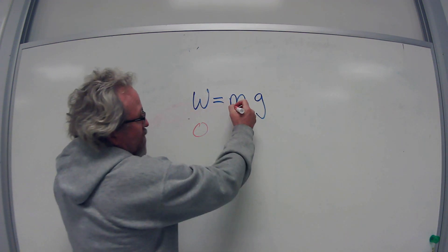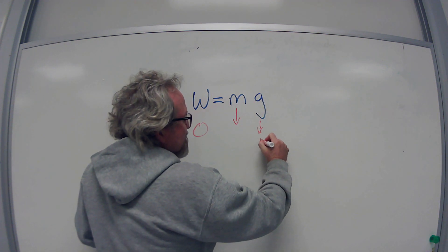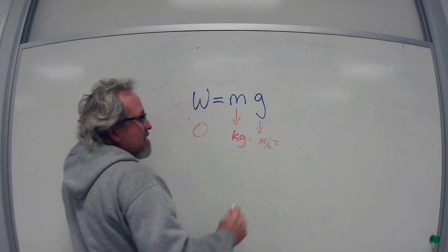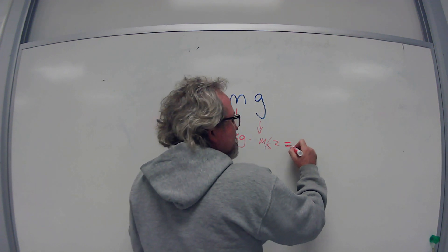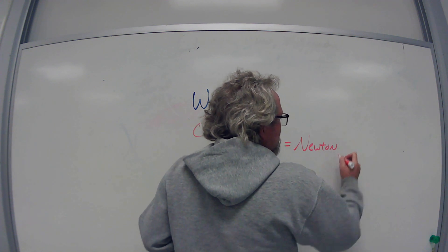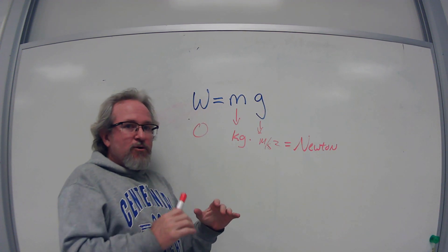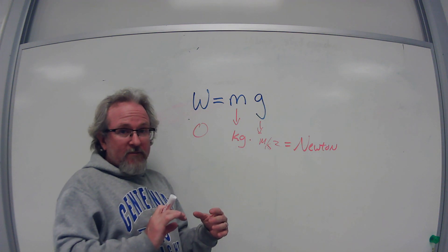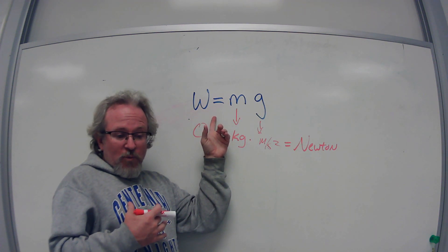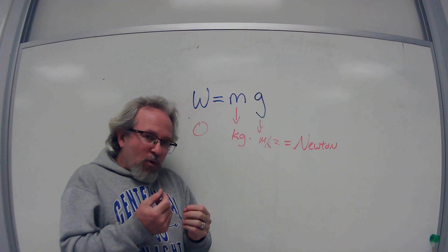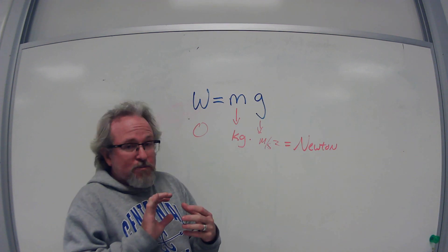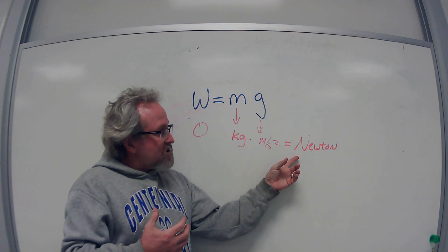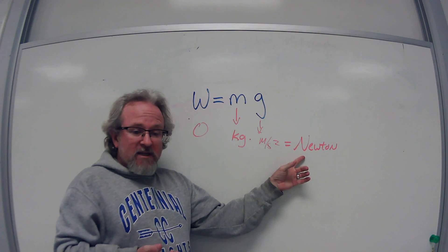When we do the math, the units work out as follows: mass is measured in kilograms, and g is in meters per second squared. A kilogram times meters per second squared equals the unit of a newton. The newton is the SI unit of force — it's how we measure pushes and pulls. Whether we're talking about the force of gravity or the push of a spring on a toy car, it's all measured in newtons.